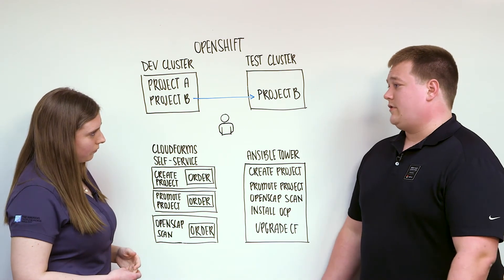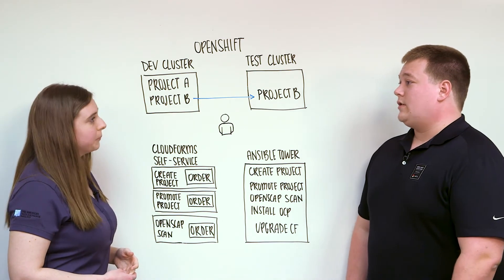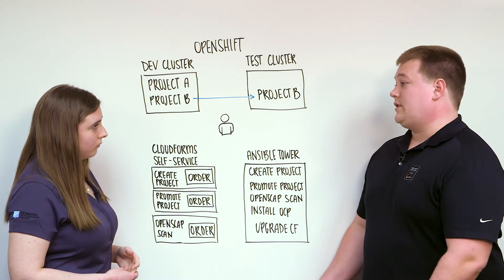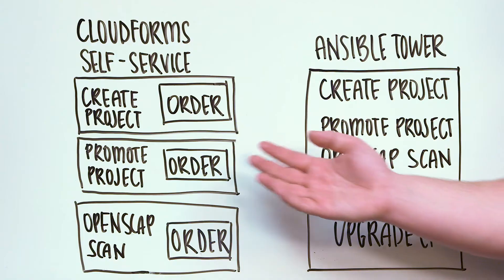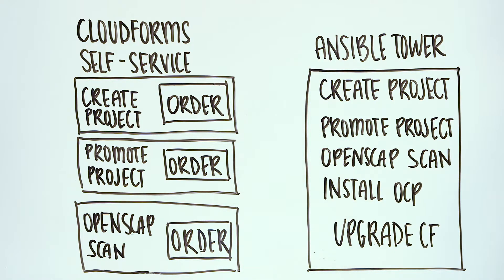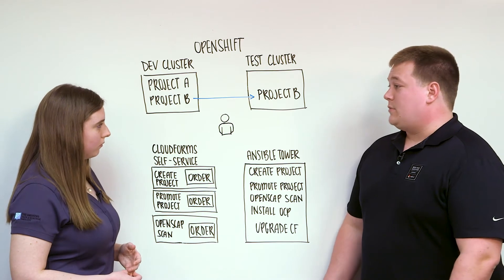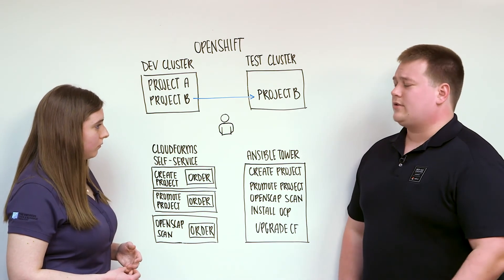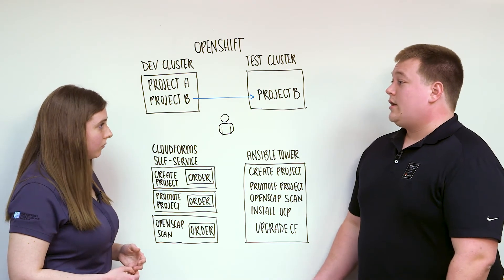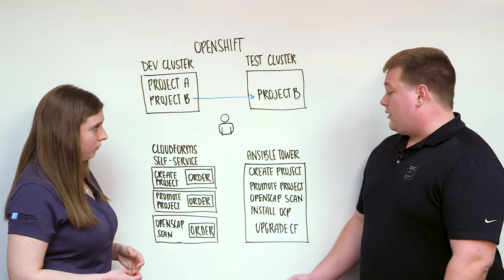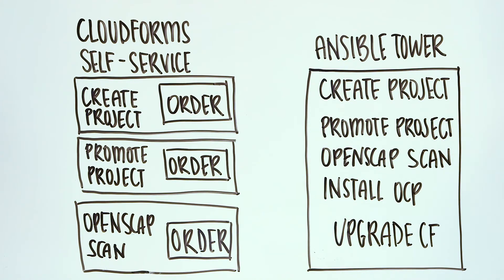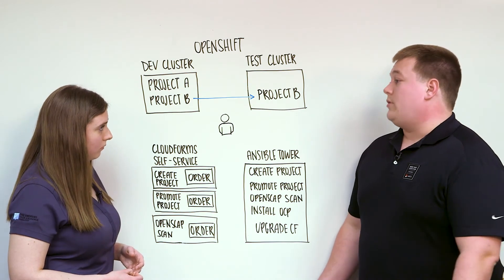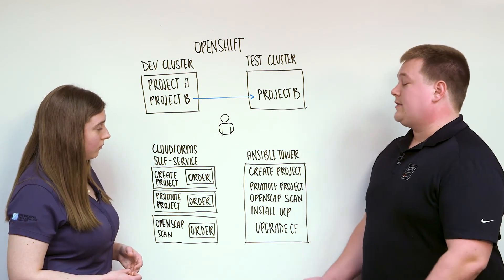We see this all the time — this is a very common use case for customers. As you mentioned, you have a number of artifacts in your dev cluster and you need to dump those things out and put them in test. In CloudForms, again, we can set up a self-service catalog item to allow users to promote the project. They click the order button, fill out some information about the things that need to come out of OpenShift — like deployment configs, service configurations, routes, etc. CloudForms will then reach out to Ansible Tower and run the promote project playbook that will dump all the artifacts and move them over and promote them into the test cluster. And just like that, you've promoted an entire project so it can be accessible in test.